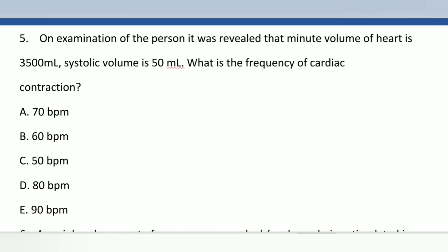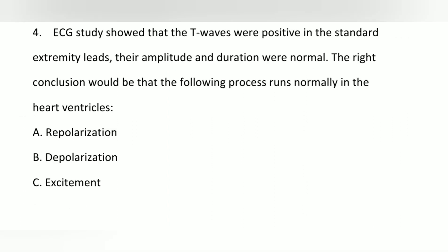This question is about heart rate equals cardiac output divided by stroke volume. The frequency of cardiac output means heart rate equals 3500 divided by 50, so the answer is 70 beats per minute.